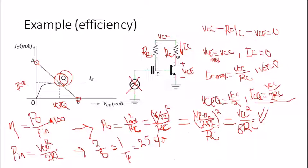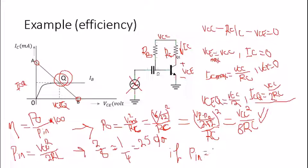This 25% efficiency is only under ideal circumstances, assuming the maximum VCE voltage equals VCC. To understand what 25% means practically: if we have 5 watts of power coming from the DC supply, we only get 1 watt at the output.